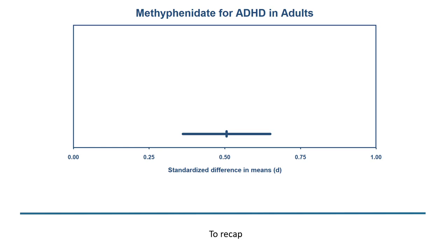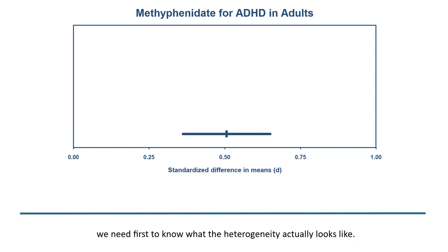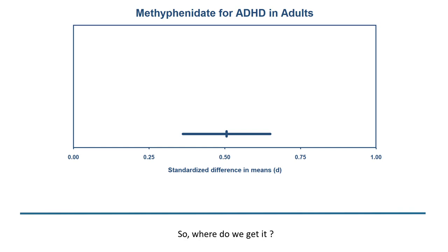So to recap, in order to have an informed discussion about the clinical implications of the heterogeneity, we need first to know what the heterogeneity actually looks like. We don't get that information from the confidence interval, and we don't get it from I-squared. So where do we get it? For that, we need something called the prediction interval.